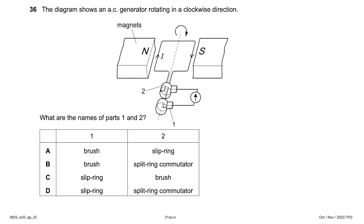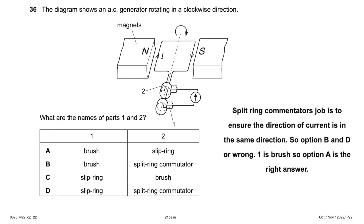The diagram shows an AC generator rotating clockwise. What are parts 1 and 2? We can eliminate C and D because part 1 is not a slip ring. We eliminate B because a split-ring commutator is used in a DC generator, not AC. In an AC generator, part 1 is a brush and part 2 is a slip ring. Answer: option A.